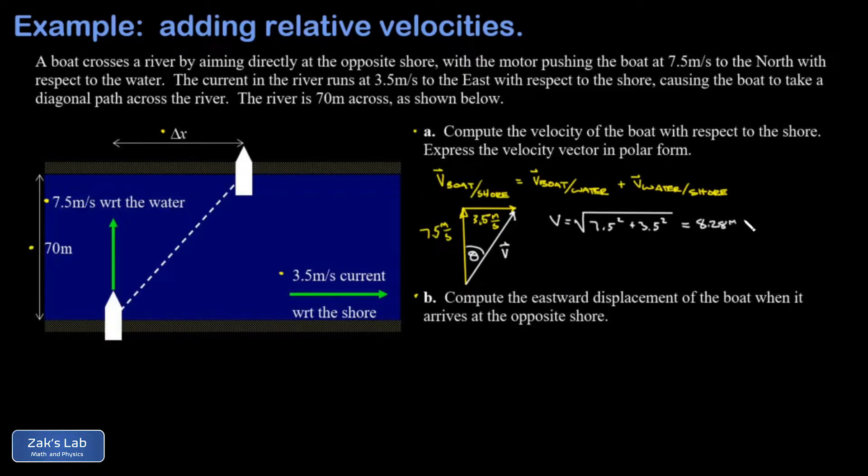The angle is given by an inverse tangent, so this is the angle whose tangent is 3.5, that's the opposite side, over 7.5, the adjacent side. When we run the numbers on this we get 25.0 degrees, sticking with the convention of keeping three sig figs on everything.